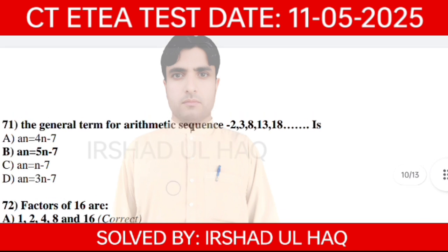The general term for arithmetic sequence 3, 8, 13, 18 is option A: N = 5N minus 7.